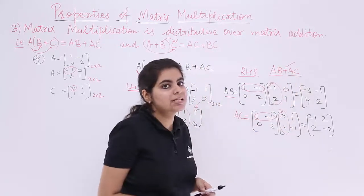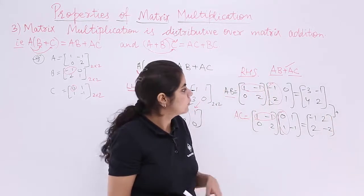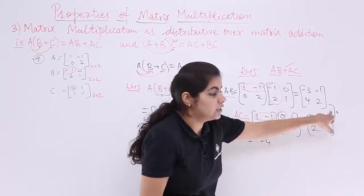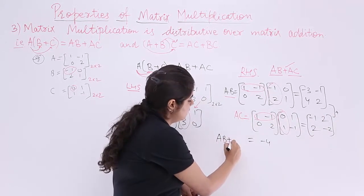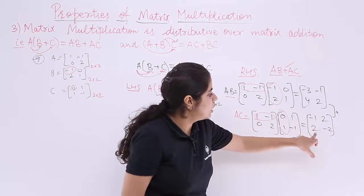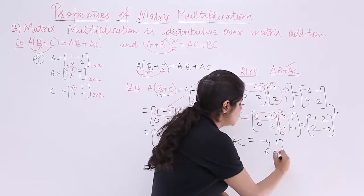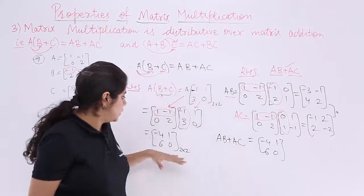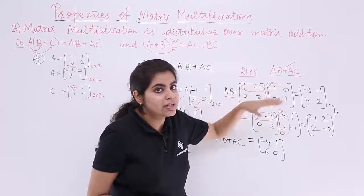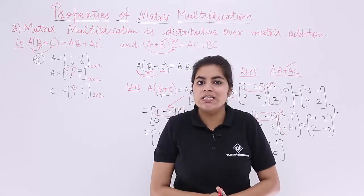Now adding AB plus AC: (-3)+(-1) = -4; (-1)+2 = 1; 4+2 = 6; 2+(-2) = 0. So AB + AC = [-4, 1; 6, 0]. We calculated LHS and RHS both and found that both results are equal. So we can say that matrix multiplication is distributive over addition.